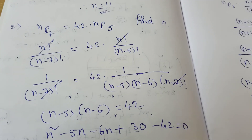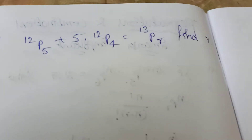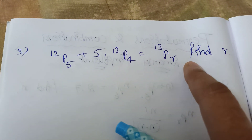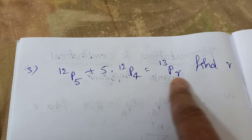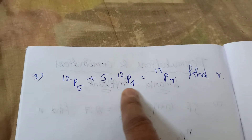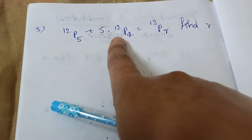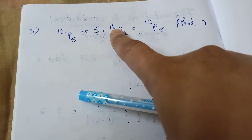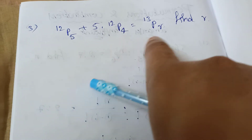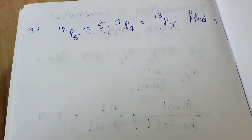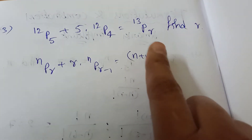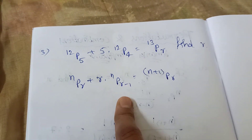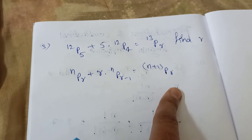Moving to the next question: 12P5 plus 5 times 12P4 equals 13Pr, find r. Note that the n value here goes from 12 to 13. There is a formula: nPr plus r times nP(r minus 1) equals (n+1)Pr.